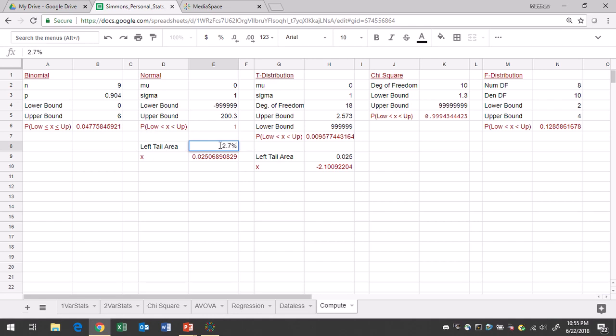You can actually write percentages in here. Just make sure you put the percent sign afterwards so the computer knows. And the lower cutoff value will be negative 1.927.